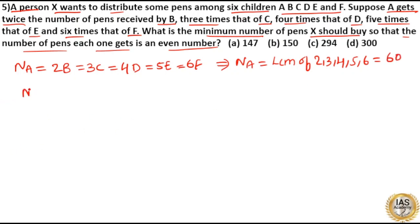Now if number of pens with A is 60 that means number of pens with B is 1 by 2 of 60 which is equal to 30. Number of pens with C is 1 by 3 of 60 which is equal to 20.